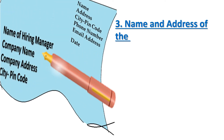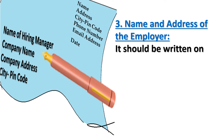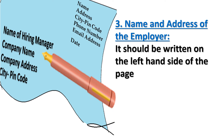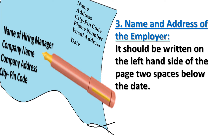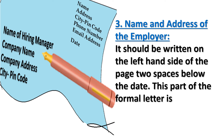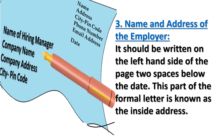Next is the name and address of the employer. It should be written on the left hand side of the page, two spaces below the date. This part of the formal letter is known as the inside address.